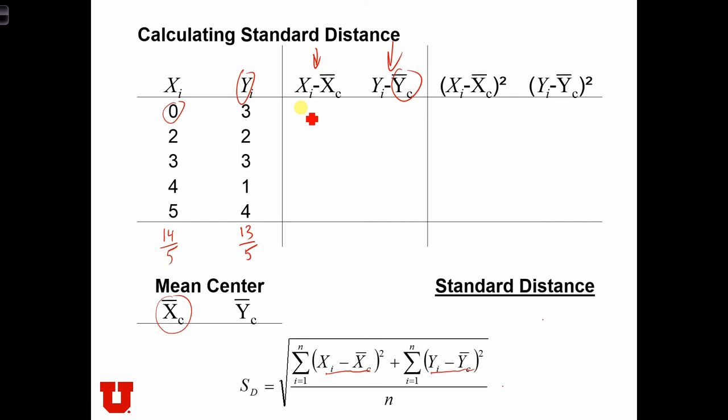So here we would have 0 minus 14 over 5, which is 2.8. So we have minus 2.8. For the next row down, we have 2 minus 2.8, so we have minus 0.8. 3 minus 2.8 is 0.2, and so on.